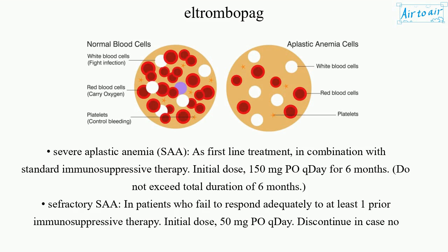Severe aplastic anemia (SAA) as first-line treatment in combination with standard immunosuppressive therapy. Initial dose: 150 mg orally once daily for 6 months. Do not exceed a total duration of 6 months.